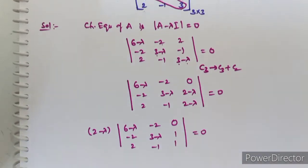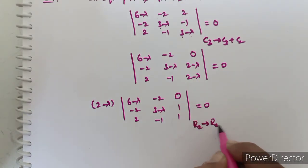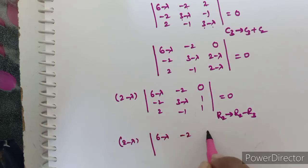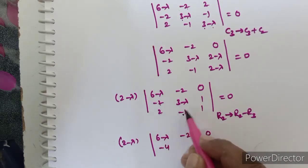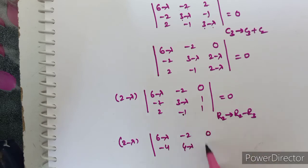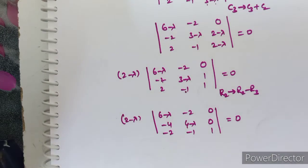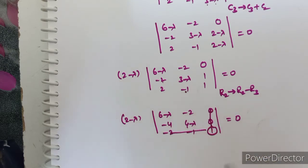Now we apply the row transformation R2 → R2 - R3. After taking (2-λ) common, the matrix becomes: first row 6-λ, -2, 0; second row (from R2-R3) -2-2, 4-λ, 1; third row 2, -1, 0. We now expand this 3×3 determinant by deleting the corresponding column and row of the element in position (1,3).